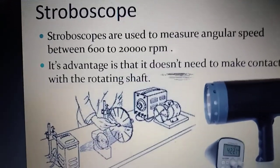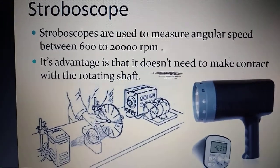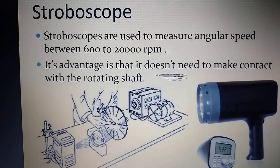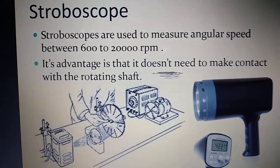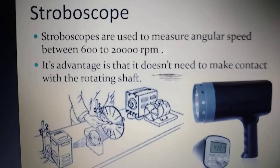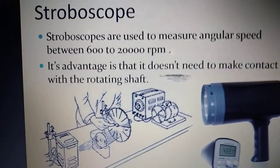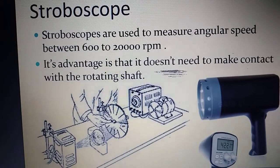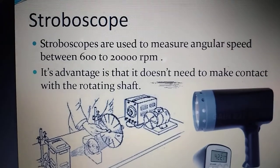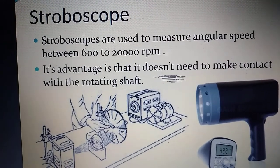Hi friends. Today we are going to discuss about the stroboscope. A stroboscope is a device for finding the speed of rotating objects in terms of RPM. Stroboscopes are used to measure angular speed between 600 to 20,000 revolutions per minute. It is also called a contactless device, and its advantage is that it does not need to make contact with the rotating shaft.